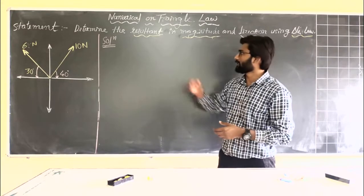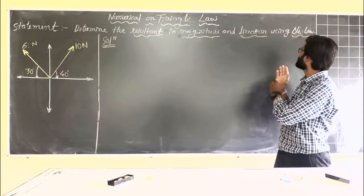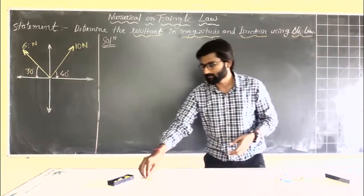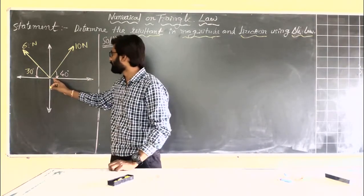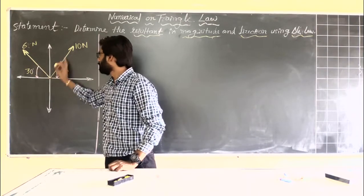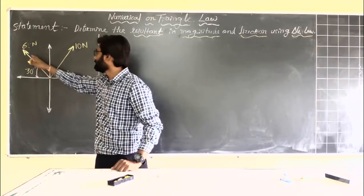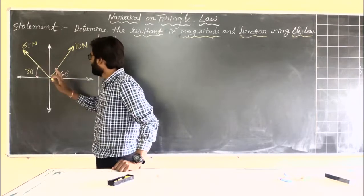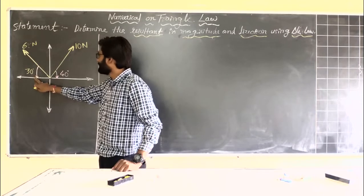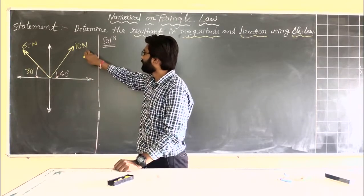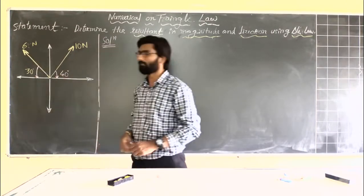The problem statement goes like this: determine the resultant in its magnitude and direction using triangle law. This is a concurrent force system where two forces are acting — one in the first quadrant and the other in the second quadrant — making angles of 40 degrees and 30 degrees respectively. The magnitudes of the two forces are 10 newton and 6 newton respectively.